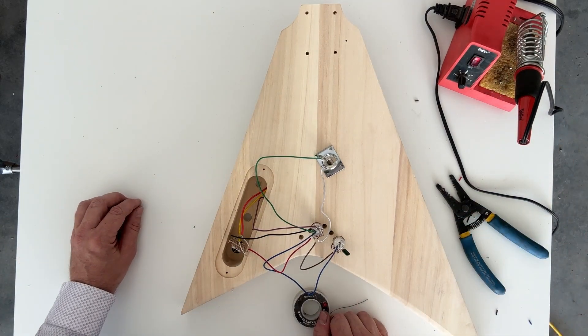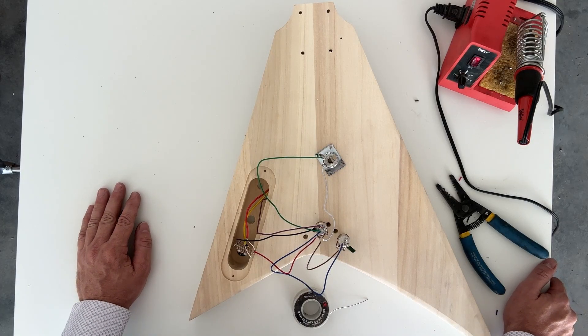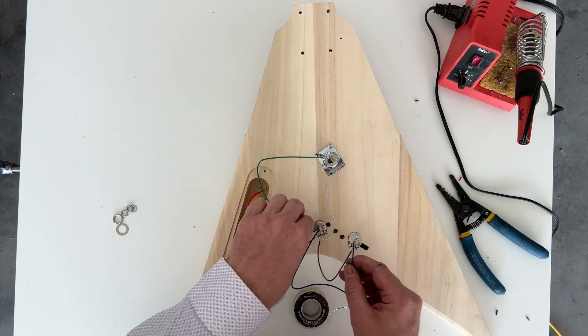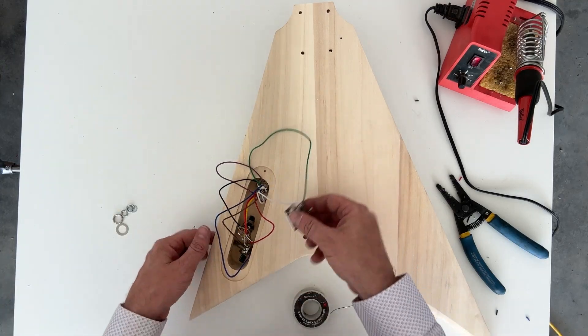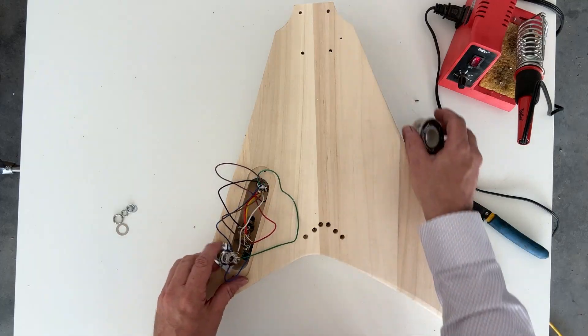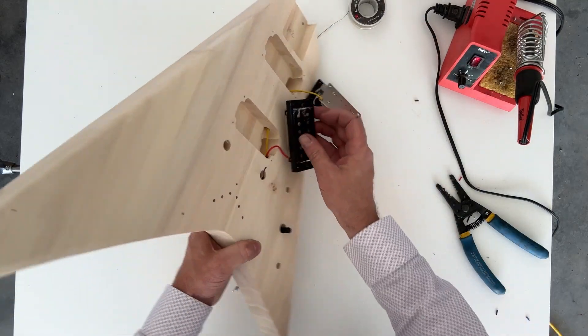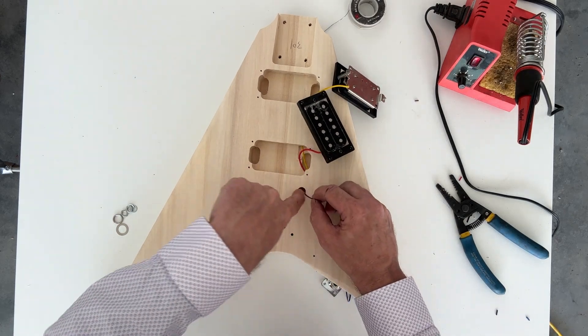That's it! So wiring diagram is online. Hopefully this video is helpful on how this all goes through. At this point we can mount the switch and the volume and the tone in their appropriate spots. Hopefully this is already mounted on the side here. Let me show you what that bridge ground looks like.